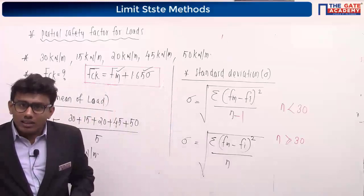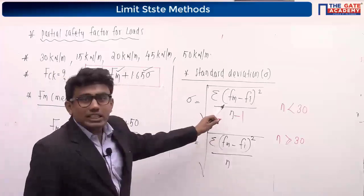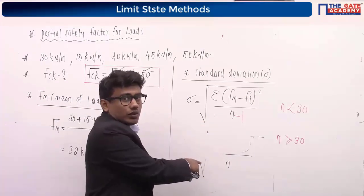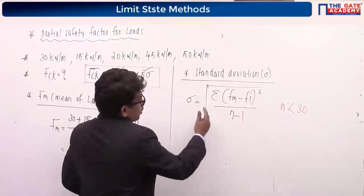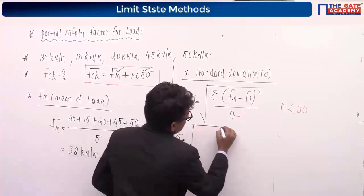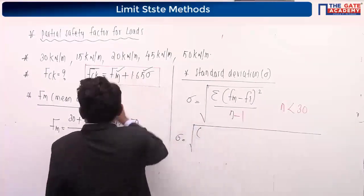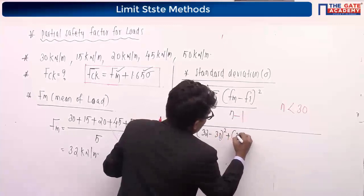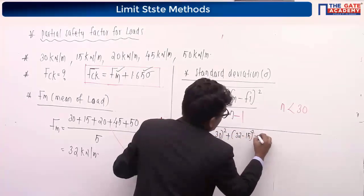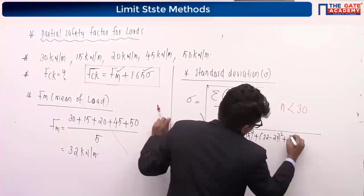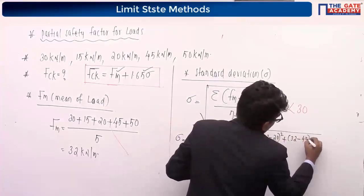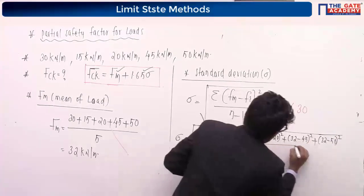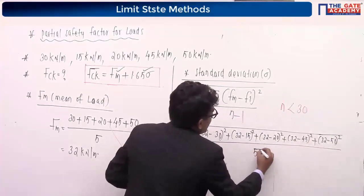Here the number of samples is 5, which is less than 30, so we use the equation with n minus 1. Sigma = square root of [(32−30)² + (32−15)² + (32−20)² + (32−45)² + (32−50)²] divided by (5 − 1).